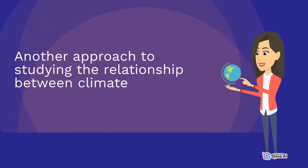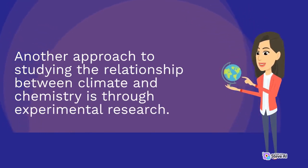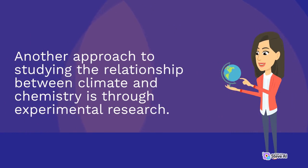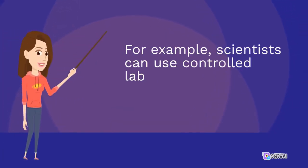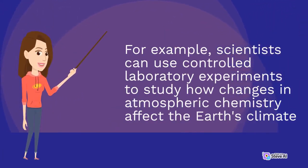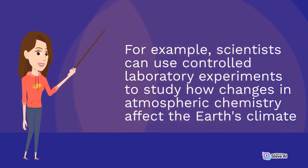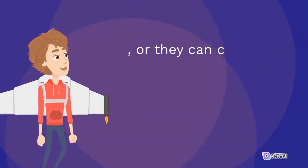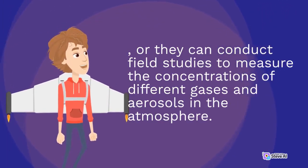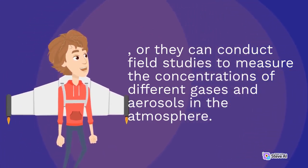Another approach to studying the relationship between climate and chemistry is through experimental research. For example, scientists can use controlled laboratory experiments to study how changes in atmospheric chemistry affect the earth's climate, or they can conduct field studies to measure the concentrations of different gases and aerosols in the atmosphere.